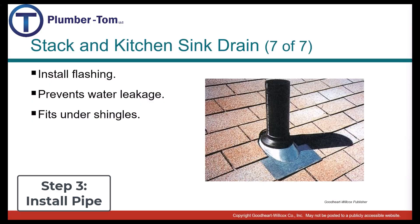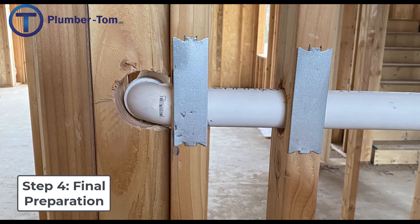When vents are installed through the roof, they must have a flashing to prevent water leakage — the flashing slides over the pipe and fits between the shingles. It is also important to protect pipes once they've passed through structural members: if screws or nails could be driven into them, they must be protected with nail plates or similar protection to prevent damage.